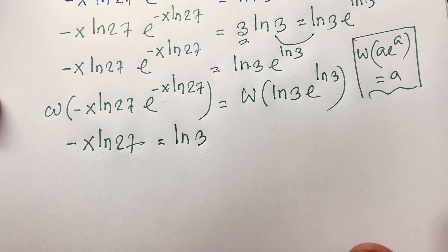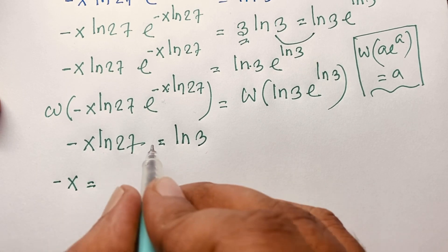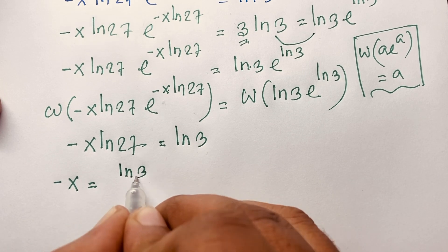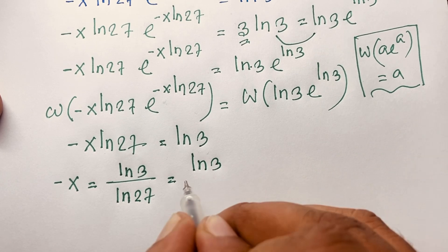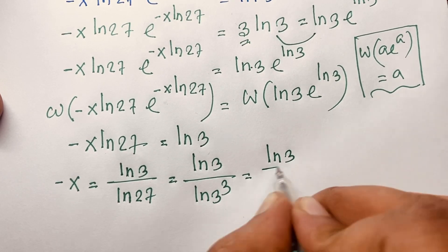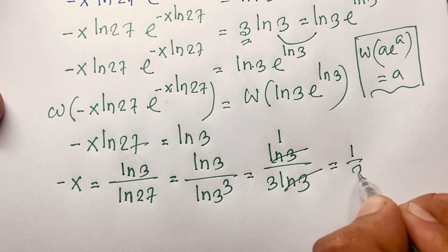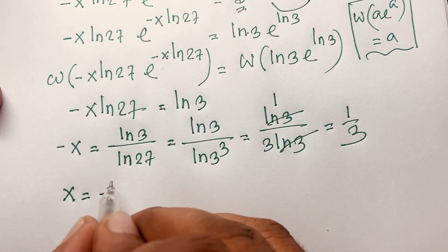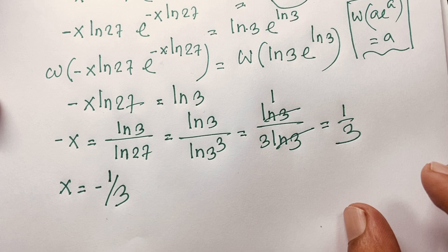Now solving for x: -x = ln3 / ln27. We know ln27 = ln(3^3) = 3·ln3, so ln3 / (3·ln3) = 1/3. Therefore -x = 1/3, which gives our final answer x = -1/3.